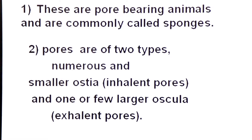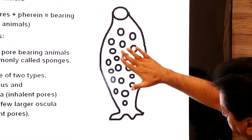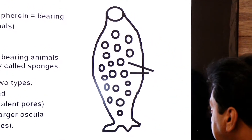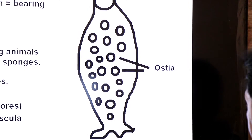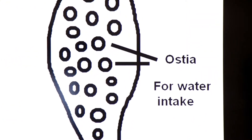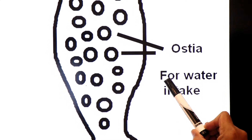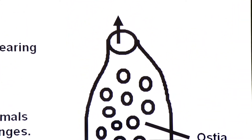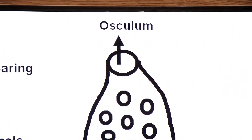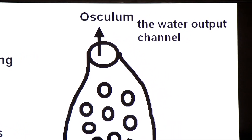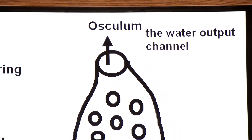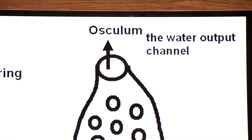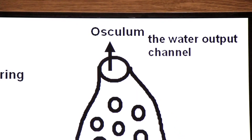Look at the diagram of the sponge. The body is porous. The smaller inhalant pores are called ostia, and their function is water intake. At the top there is a larger pore known as osculum, the exhalant pore. The osculum is the water output channel — water leaves the body of the sponge through the larger pore called osculum.